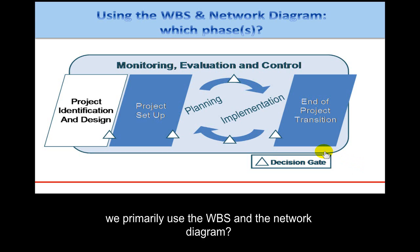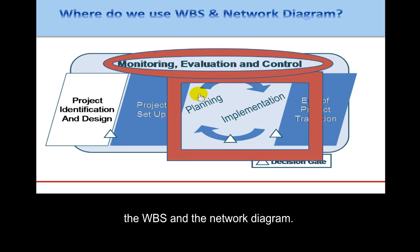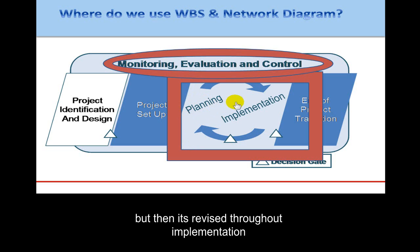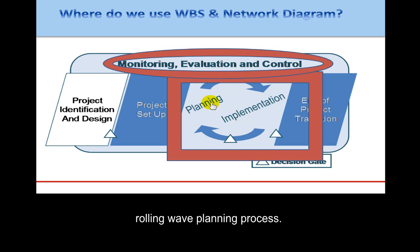Which phase of the PMD Pro 1 phase model do we primarily use the WBS and the network diagram? This square represents the main place where we use the WBS and the network diagram. Initially it's used in planning, but then it's revised throughout implementation through this iterative cycle — the rolling wave planning process.